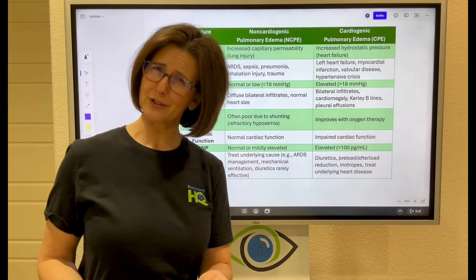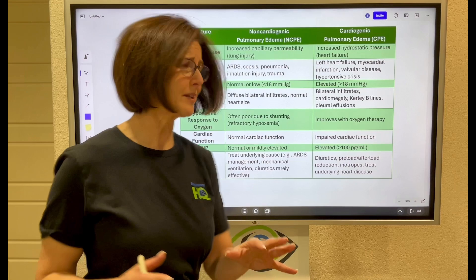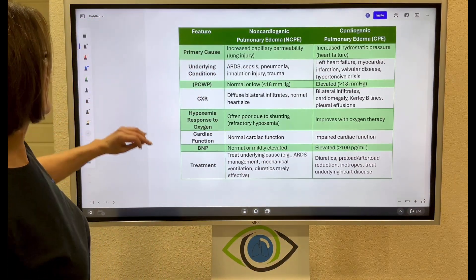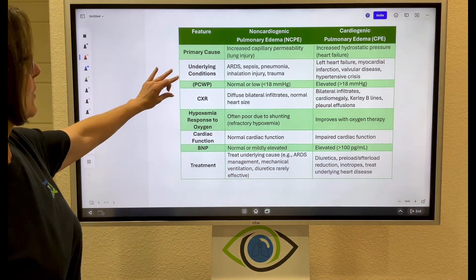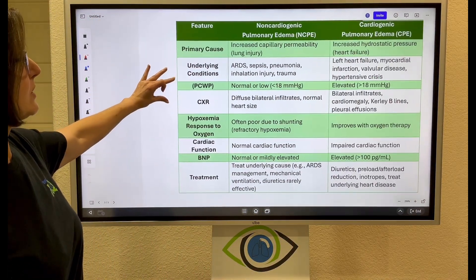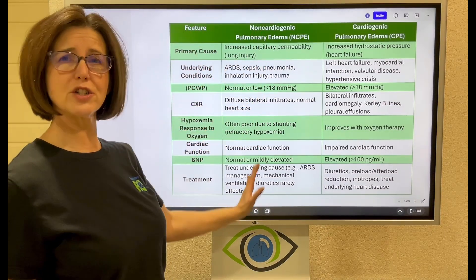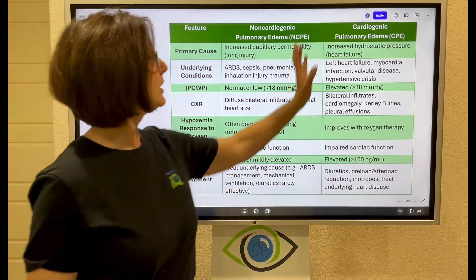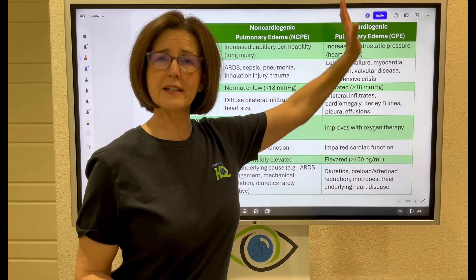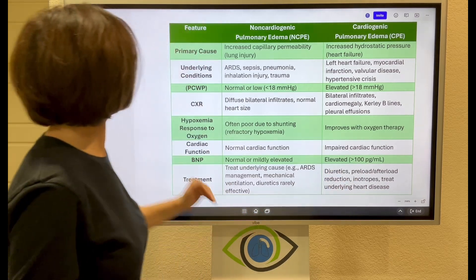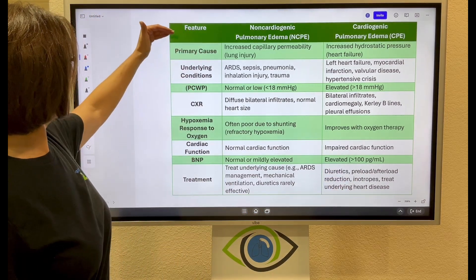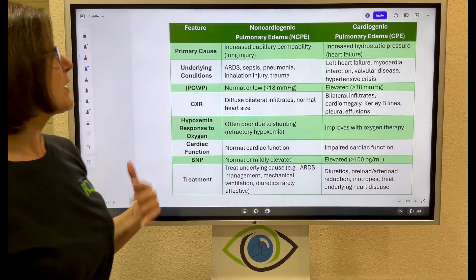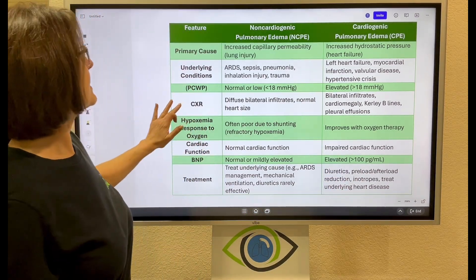Sometimes the best way to make comparisons is just to do a chart. I know this looks really busy, but bear with me and we are going to make this make sense. We have non-cardiogenic pulmonary edema here, cardiogenic pulmonary edema here, and then the main areas we're going to talk about.